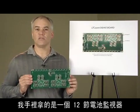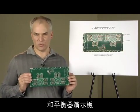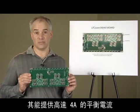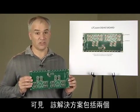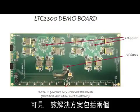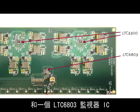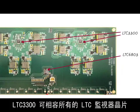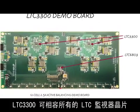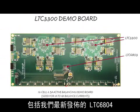I'm holding in my hand a 12-cell monitor and balancer demo board capable of up to 4 amps of balancing current. As you can see, the solution includes two LTC 3300 balancer ICs and one LTC 6803 monitor IC. The LTC 3300 is compatible with all LTC monitor chips, including our latest release, the LTC 6804.